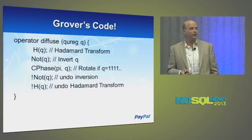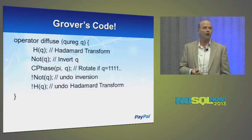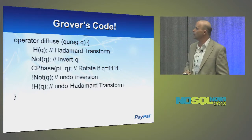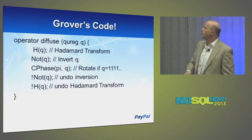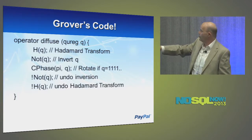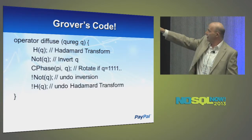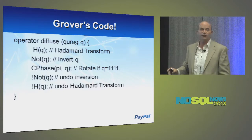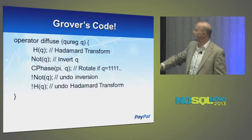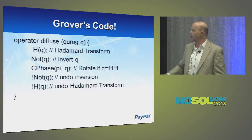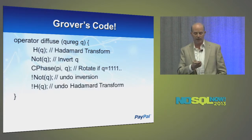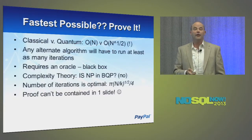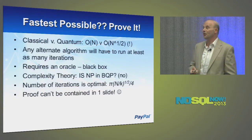If you wanted to write code for this, there are multiple languages out there. I use QCL for most things. This is an example of QCL for Grover's algorithm. What we do here: we use the H gate, that Hadamard transform, we do an inversion, we check the phase of the bit that we're looking at, then we undo the inversion, undo the Hadamard transform, and the resulting bit has the answer that we want. It's actually true — that's exactly how it works.